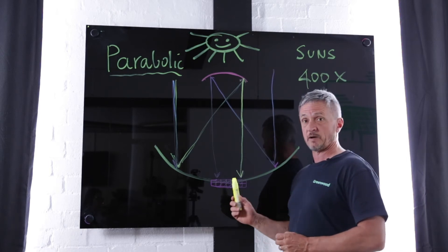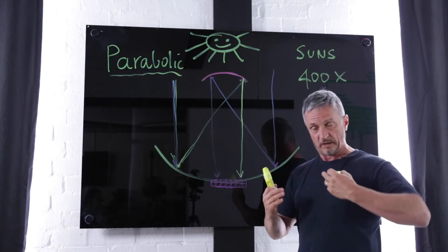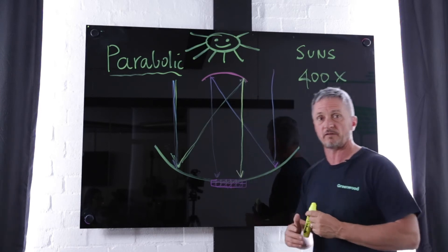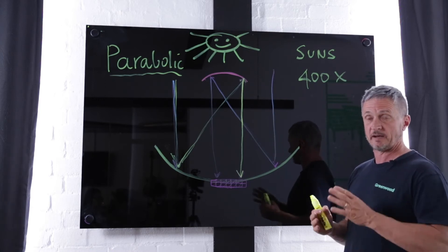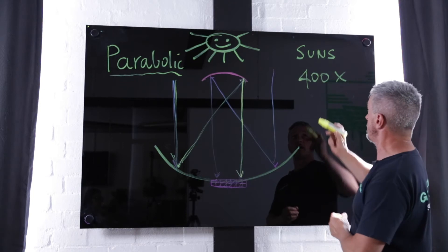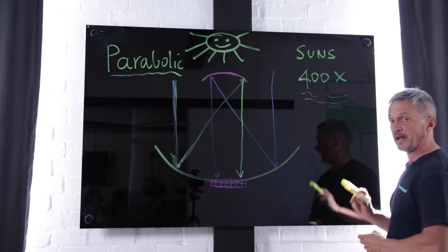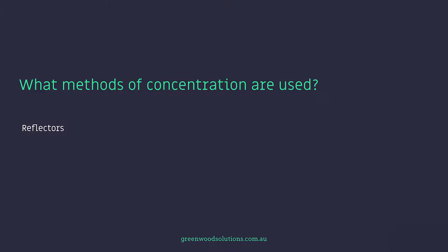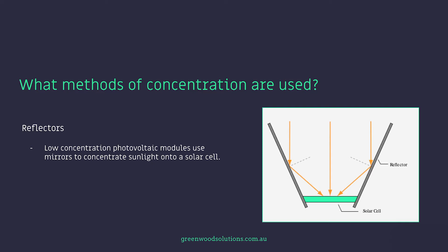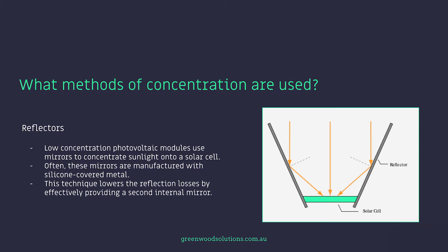The concentrations, depending on what level, are all called suns. With the high-grade multi-junction PN cells that are used, you can achieve up to 400 times — so that's effectively 400 times the intensity of the sun. Reflectors are used for low concentration PV modules; they use mirrors to concentrate sunlight onto a solar cell, and often these mirrors are manufactured with silicon-covered metal. This technique lowers the reflection losses by effectively providing a second internal mirror.